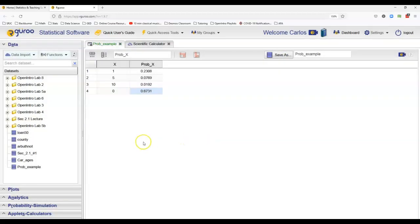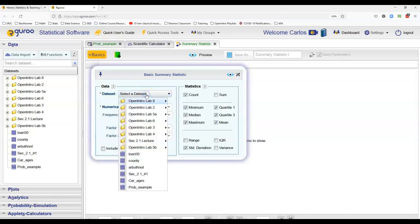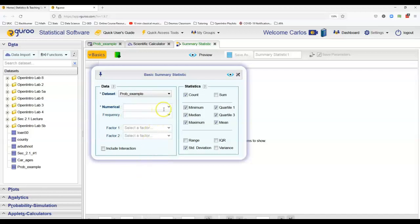All right, so I've saved that data set. Now I want to go ahead and find the expected winnings as well as the variance and standard deviation. Well, fortunately, we know how to do that already. We're going to use summary statistics. It's basically the same as finding the mean and standard deviation when we had a data set that was given as a frequency table. So I select prob example.